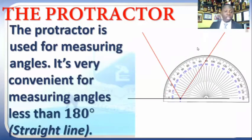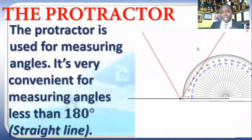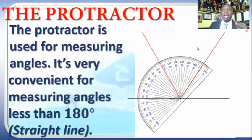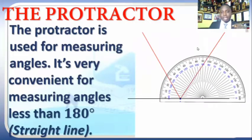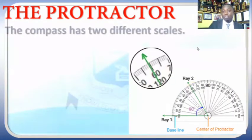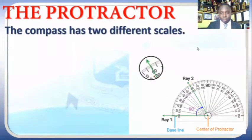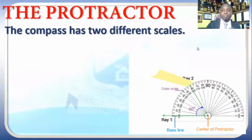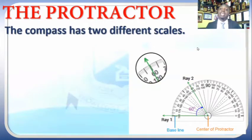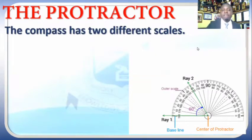It is very convenient for measuring angles that are less than 180 degrees. If you look at the calibration on your protractor, you have two different scales: the outer scale and the inner scale. The outer scale measures from zero at the left to 180 on the right following a clockwise direction, while the inner scale starts from zero at the left and moves in an anti-clockwise direction to 180 at the right.